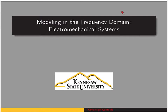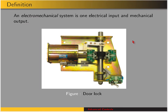We're going to add on to what we've looked at with rotational systems and systems with gears, and now we'll consider electro-mechanical systems. By definition, an electro-mechanical system is one with electrical input and mechanical output. Here's an example: electrical input will cause translation to a locking mechanism. So we have electrical input and mechanical output.